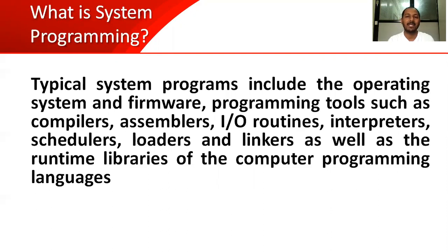Now let us differentiate system software with application software. Application software is a program or software which is installed above the operating system. Without an application program, the system can still work. An example of application software is Microsoft Office — without installing Microsoft Office, we can still start and use the machine. So application software is dependent on the user; whoever wants it can install it.